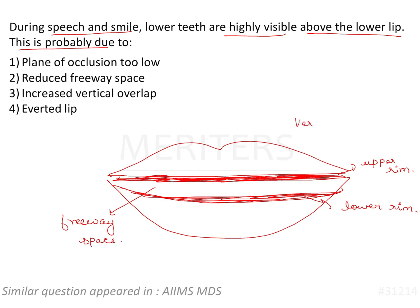We are talking about vertical dimension at rest. What is the reason that the lower teeth are appearing higher than the occlusal plane? The first option: plane of occlusion too low. That is not correct, because if the plane of occlusion is low, then the teeth will be lesser visible. Here the plane of occlusion is higher as compared to normal — so incorrect.